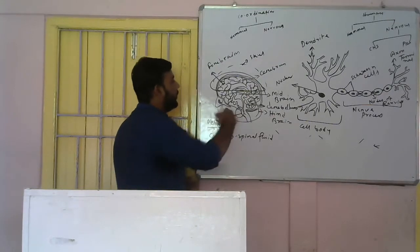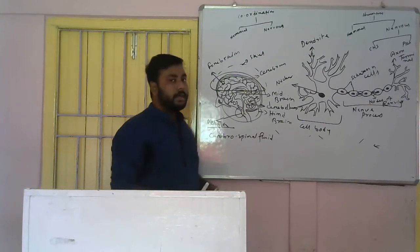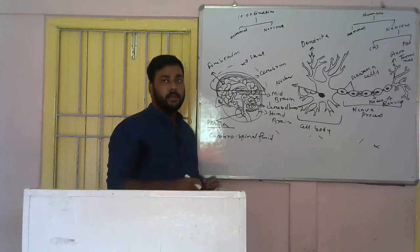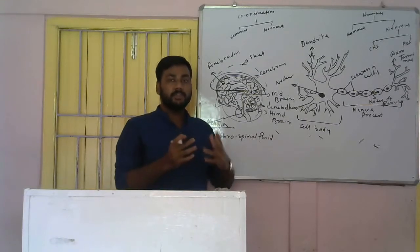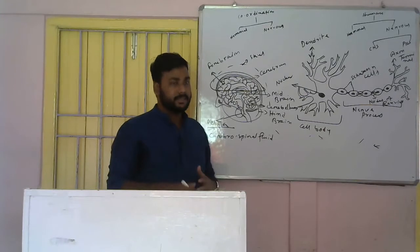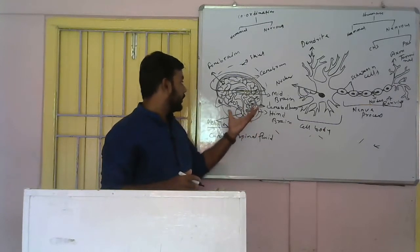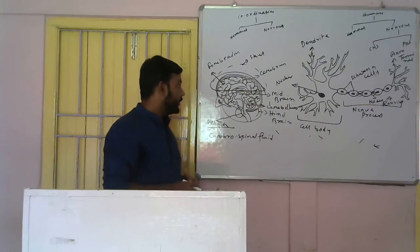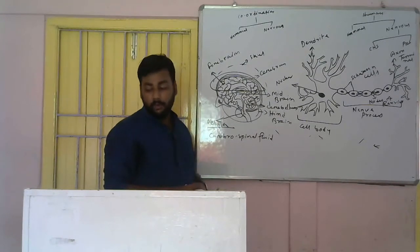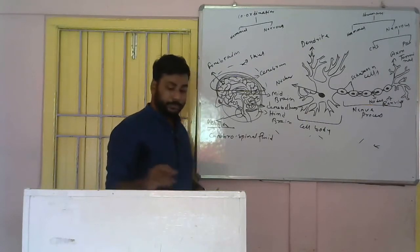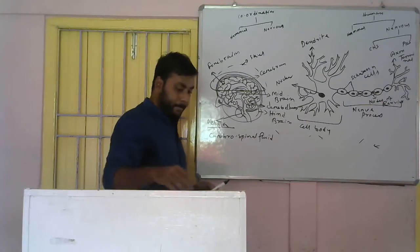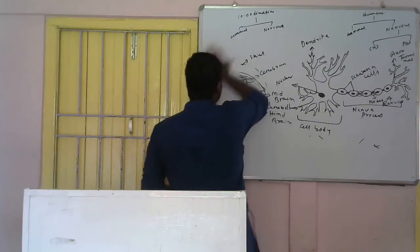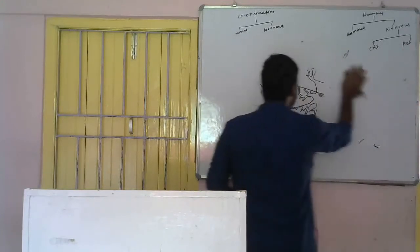To recap: the forebrain contains the cerebrum and is the receptor spot of the sense organs, site of emotion, memory, intelligence, etc. The midbrain along with the hindbrain controls involuntary functions. The hindbrain has two major organs — cerebellum and medulla. The medulla is responsible for blood pressure and vomiting, and the cerebellum is responsible for balance and precision.